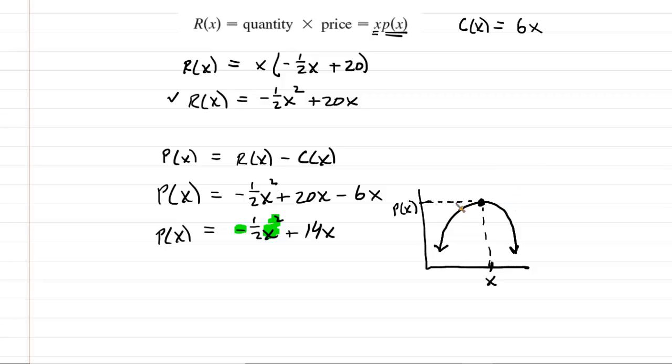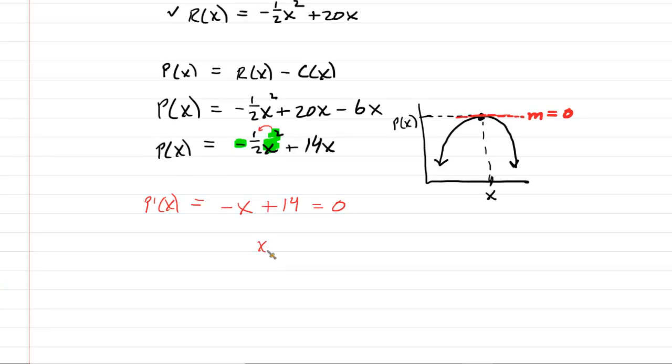So how do we do that? Well, we recall that at that maximum point, the slope of the tangent line right there would equal 0. So what we're going to do to get the slope of the tangent line, of course, is do the derivative. That's what the slope of the tangent line is, the derivative. p prime of x equals, we have some simple power rule right here. We just multiply the 2 by the negative 1 half. This gives us negative 1x raised to the power of 1 plus the derivative of 14x, which, of course, is just 14. We then set this equal to 0 because, remember, the slope of the tangent line has to equal 0 at that maximum. And when we solve this out, we can see that x is equal to 14. So that x right there would be 14.